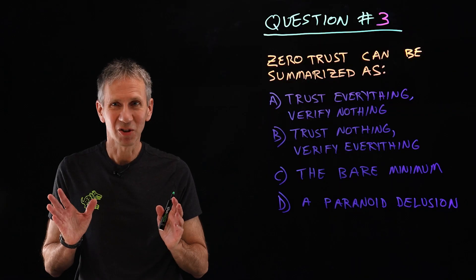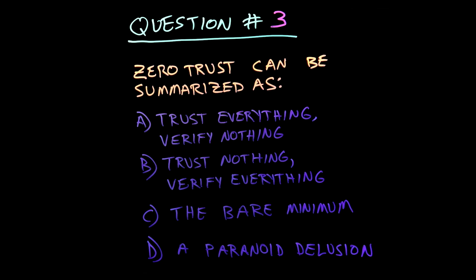Question number three. These aren't too hard, right? Zero trust can be summarized as: A, trust everything, verify nothing. B, trust nothing, verify everything. C, the bare minimum. D, a paranoid delusion.